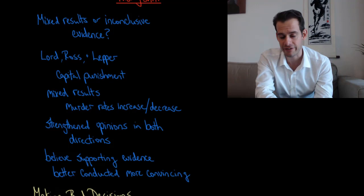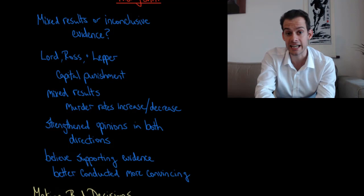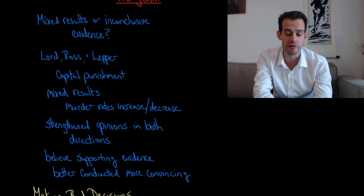Well, what Lord, Ross, and Lepper proposed is that what happens is the people in the groups look only at the supporting evidence. This relates to the idea of confirmation bias. So they look at this, let's imagine there are six studies that we're looking at for something, and three of them support our opinion and three don't.